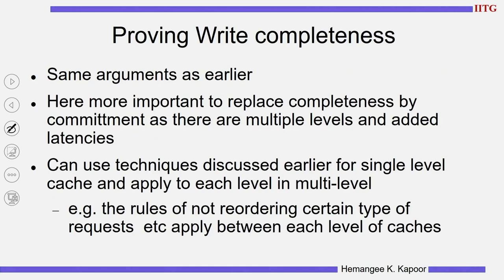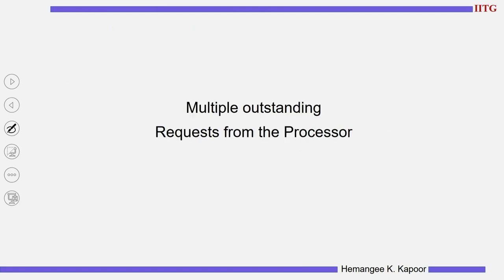Regarding write completeness: the arguments are the same as earlier where we said we can safely replace commit with complete. In the case of a multi-level cache with a split transaction bus, we want to replace completeness with commitment. Why? Because there are multiple levels and it will have more latency. The scenario is: multiple levels, more latency, hence the protocol uses commit and does not wait for completeness. All the arguments used for a split transaction bus with a single-level cache hold in this case as well, and hence write completeness can be guaranteed.